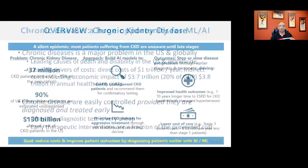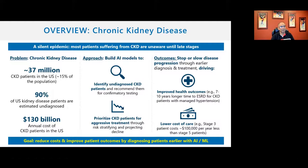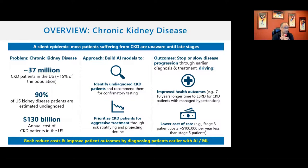Six in 10 adults in the US suffer from chronic disease; 4 in 10 have two or more. But if you can diagnose and treat them early, life is great. Let's look at chronic kidney disease as a signature example. These stats are staggering: 15% of the US adult population — 37 million adults — suffer from chronic kidney disease. Only 10% of them know they have it when they're diagnosed.